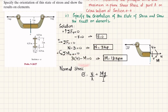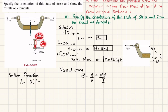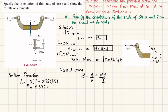Now we find the section properties A and I. The area of the cross section is computed by taking the full 2×1 rectangle and subtracting the two interior cutout portions. The remaining height is 2 − 0.5 − 0.5 = 1.5 inches, and the remaining width is 1 − 0.25 = 0.75 inches. So A = 2×1 − 0.75×1.5 = 0.875 square inches.